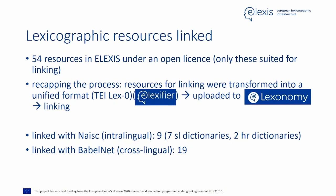Let's move on to the lexicographic resources that have been linked in the project. Out of all lexicographic resources included in the infrastructure, 54 resources were available under open licenses — mostly Creative Commons, but others as well — and only these were suited for linking. To recap the process: resources had to be transformed into a unified format, largely done with another ELEX's tool, Elexifier. Subsequently, those resources were uploaded to Lexonomy, another ELEX's tool where linking is executed. Ultimately, nine resources were linked with NASHQ — specifically seven Slovene dictionaries and two Croatian dictionaries — and 19 dictionaries were linked with BabelNet.